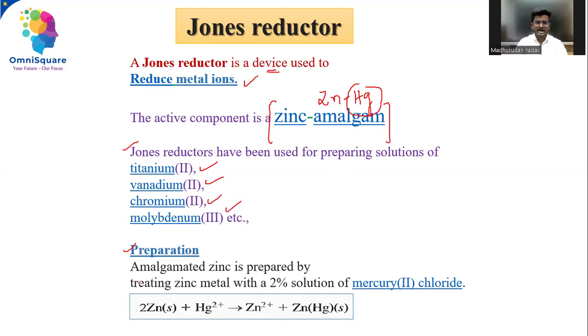Now, how is the Jones reductor prepared? Amalgamated zinc is created by inserting zinc metal with a 2% solution of mercury chloride, so HgCl2 is used for the preparation of Jones reductor. This Hg plus two is coming from HgCl2.